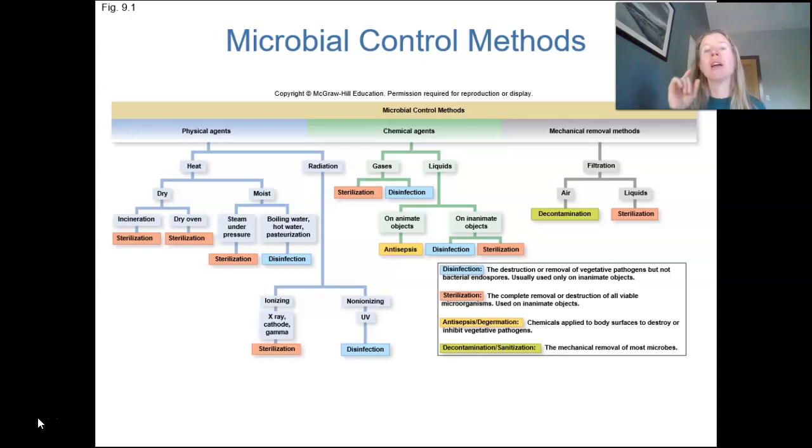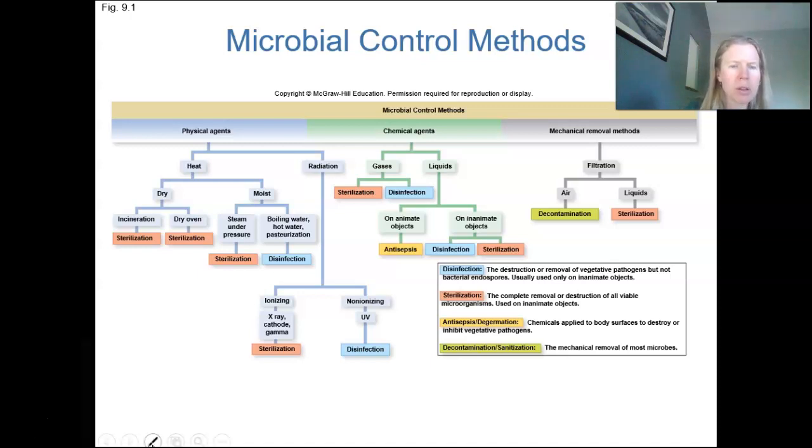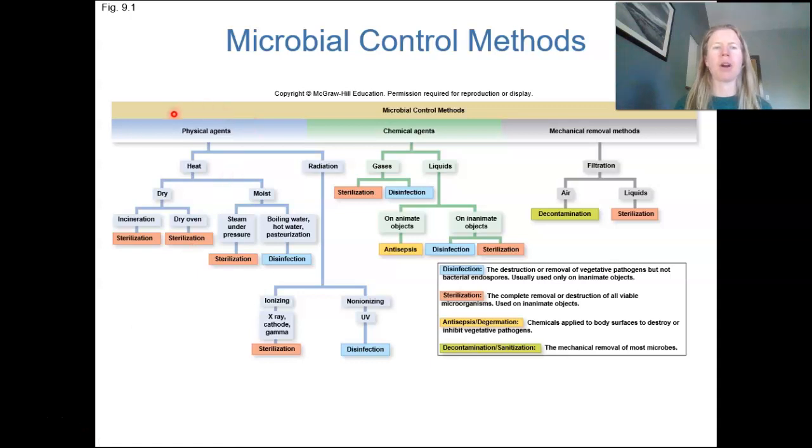So in chapter 9 here, this graph is key. I think this basically explains the entire chapter, and from here on out, everything else is details. So we have three main ways that we can go ahead and get rid of or control these microbes.